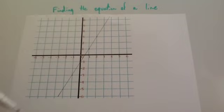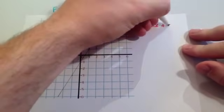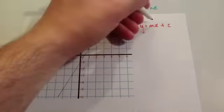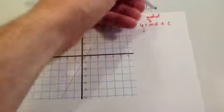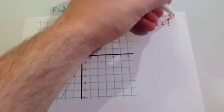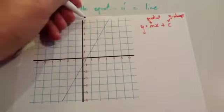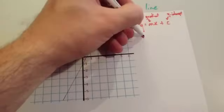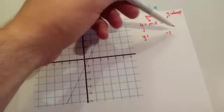Here we've got a line drawn for us, and we're going to find the equation y equals mx plus c. To do that we need to find two things: one is its gradient — remember the m stands for the gradient — and c stands for the y-intercept, in other words, what value it crosses the y-axis at. So the y-axis is this one, and it crosses at minus 1, so it's going to be y equals something minus 1. The y-intercept is minus 1.